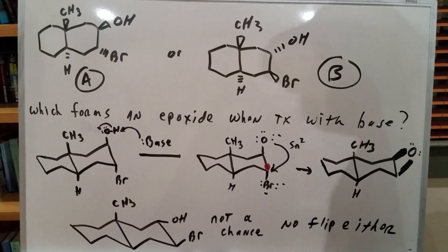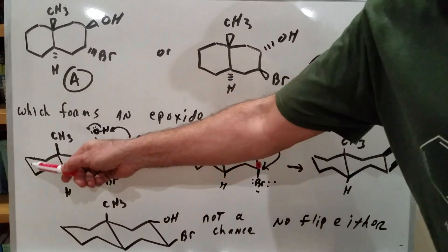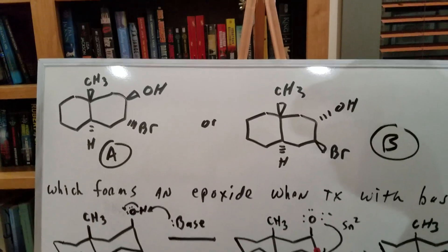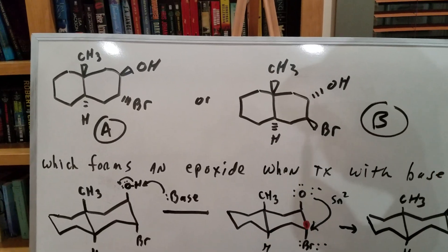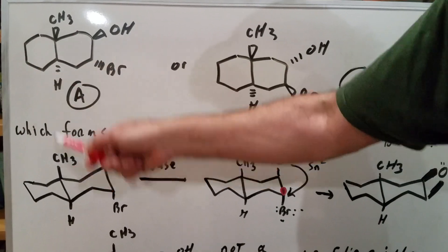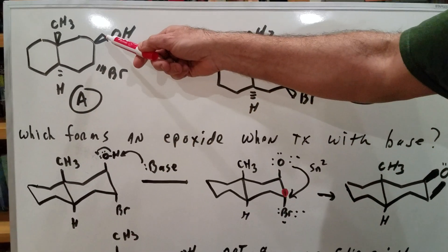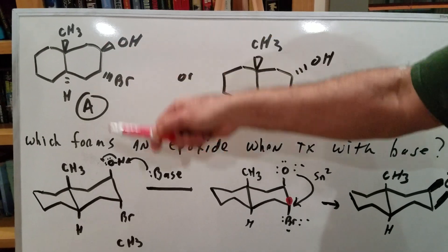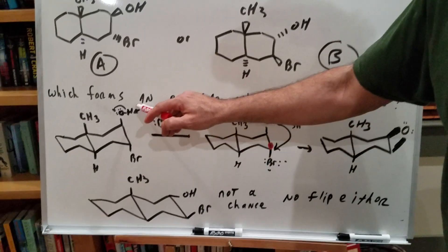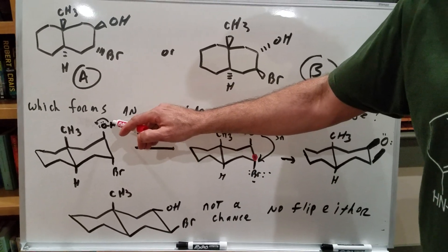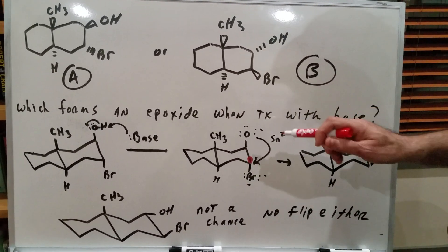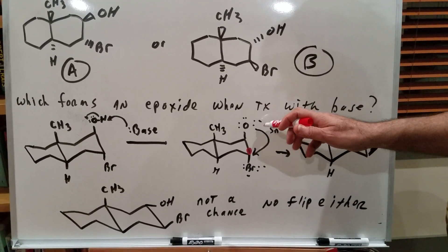That means it's a trans ring junction. When it's trans — and usually the trans will be the one you're interested in — that's the most stable. We draw two cyclohexane rings like this. Now remember these three words that I bang into my students' heads: respect thy stereochemistry. So a wedge means the group is going up, a dash means the group is going down. That means this is going up and this is going down.